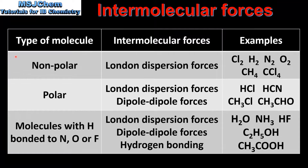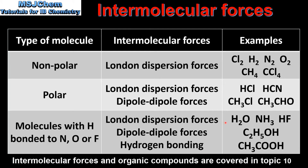So let's end with a summary. In this table we have the type of molecule, the type of intermolecular forces and some examples. Non-polar molecules only have London dispersion forces; examples include diatomic molecules such as chlorine, hydrogen, nitrogen and oxygen, as well as methane and carbon tetrachloride. Polar molecules have London dispersion forces and dipole-dipole forces; examples include hydrogen chloride, hydrogen cyanide, chloromethane and ethanol. Finally, molecules with hydrogen bonded to either nitrogen, oxygen or fluorine have London dispersion forces, dipole-dipole forces and hydrogen bonding; examples include H2O, NH3, HF, C2H5OH which is ethanol and CH3COOH which is ethanoic acid.